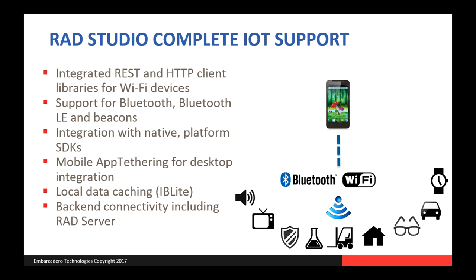Another interesting technology in the context of IoT is AppTethering. With AppTethering, we can have any two applications communicating with each other and exchanging data. This typically means being able to use a mobile device and communicate with a desktop device. For example, a smartphone could take photos and send them through AppTethering to a desktop application connected to a database. There are also other use cases where two mobile devices communicate with each other.